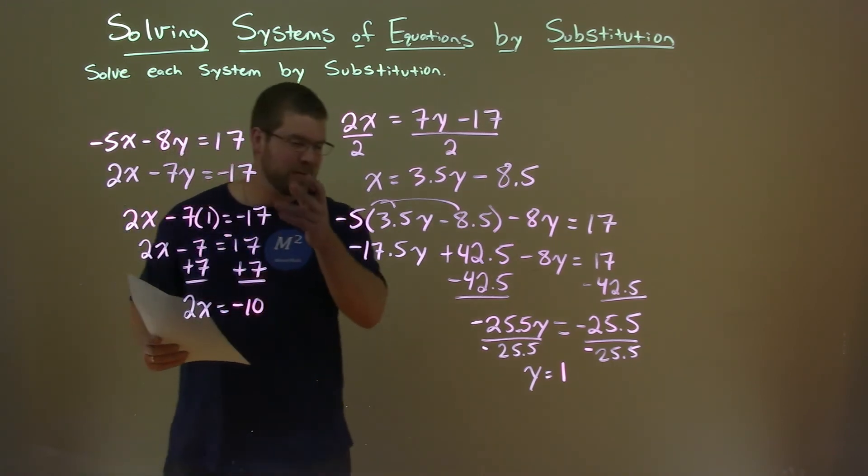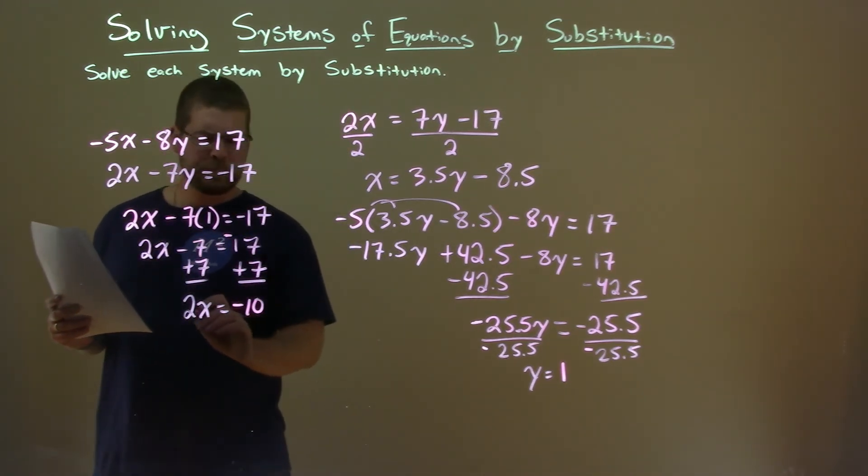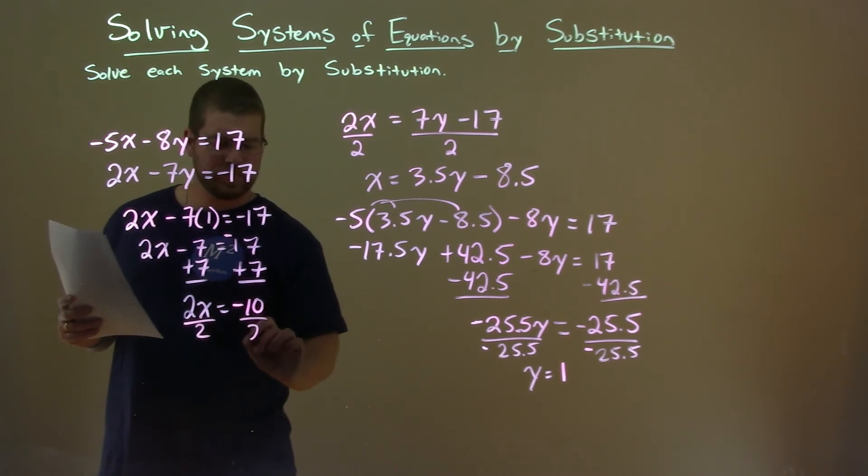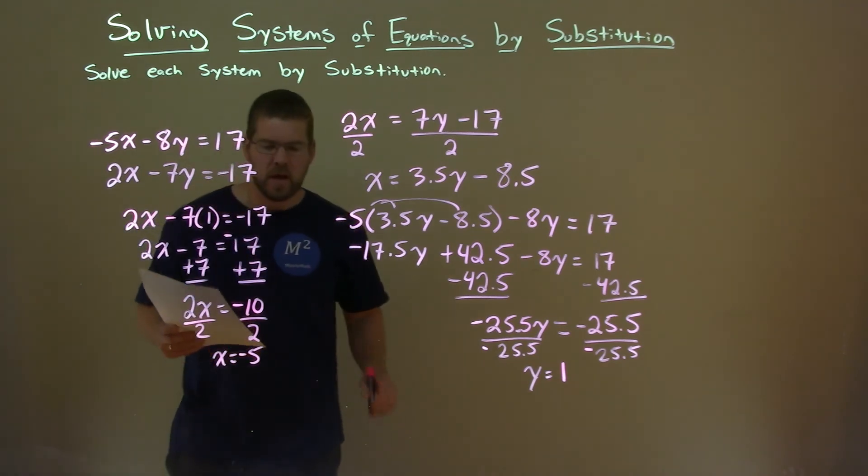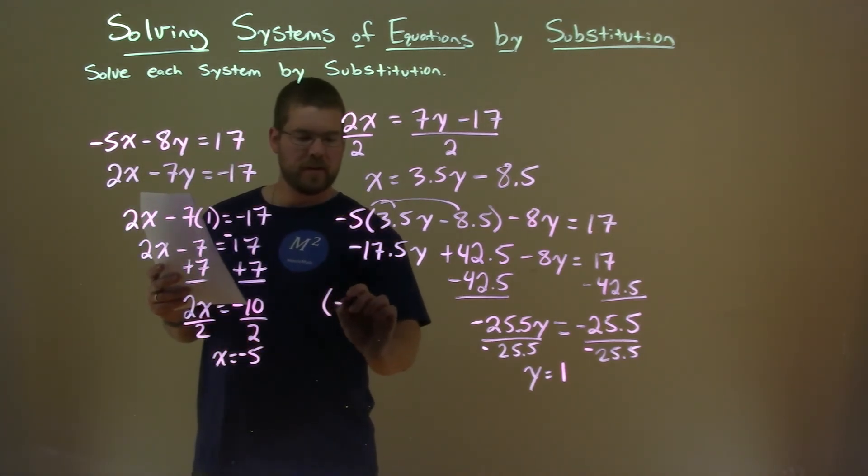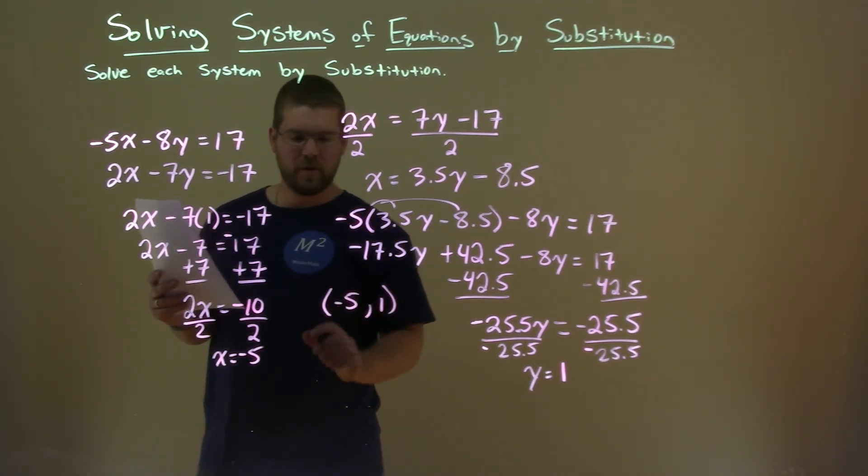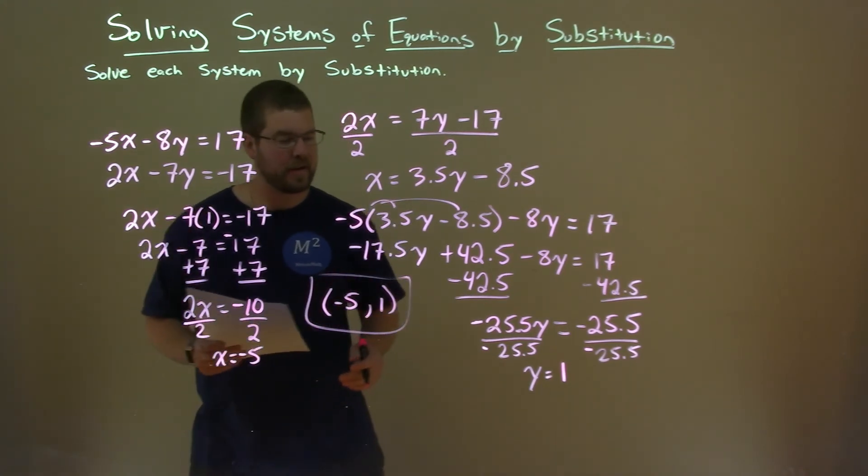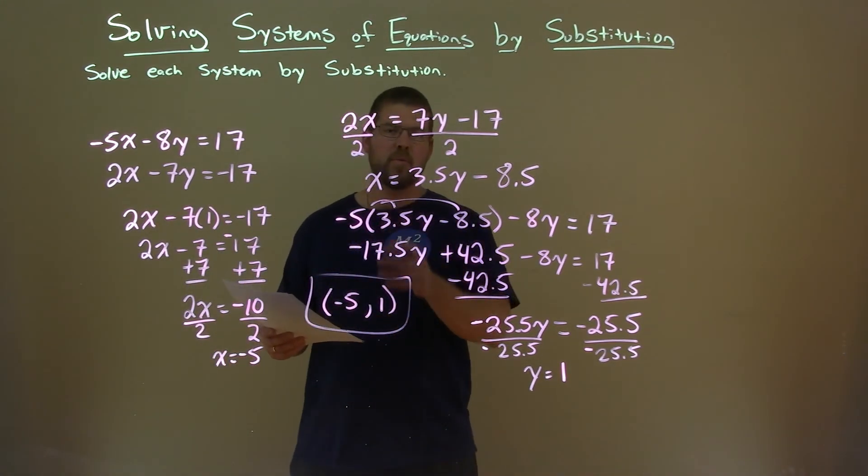But I caught them all. So give me props to that at least. Divide both sides by 2. And x equals -10 divided by 2 is -5. And so our coordinate point is -5, 1. And with all my almost mess ups with negatives, but I caught them all, our final answer is -5, 1.